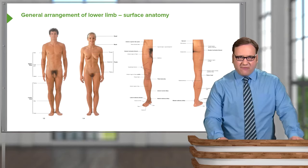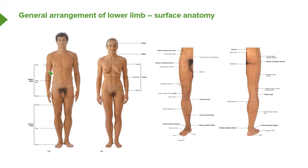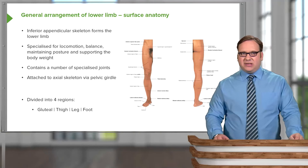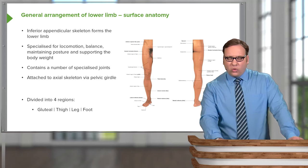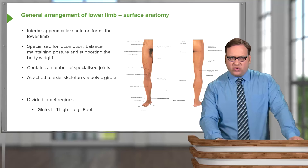You should be familiar with the general body plan. Previously we looked at the bones and muscles that form the upper limb or the superior appendicular skeleton. Now we're dealing with the lower limb, formed by the thigh and the leg. We can see some surface features of the inferior appendicular skeleton, with the anterior and posterior surfaces shown on screen. It is specialized for locomotion, movement, maintaining balance, posture, and supporting the body's weight, and like the upper limb, it contains a number of specialized joints.